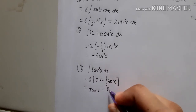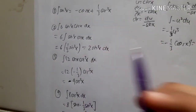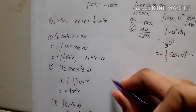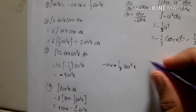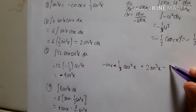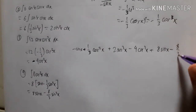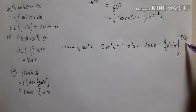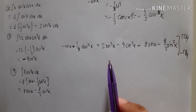Now we combine all four antiderivatives before applying the limits from −π/4 to π/4: [−cos x + (1/3)cos³x] + [2sin³x] + [−4cos³x] + [8sin x − (8/3)sin³x], with limits π/4 to −π/4.